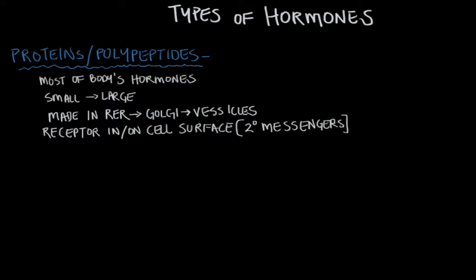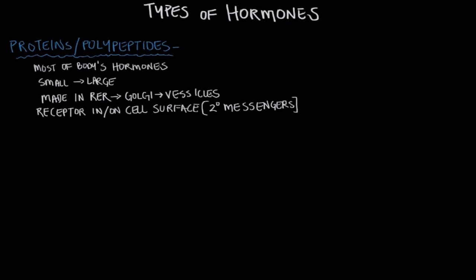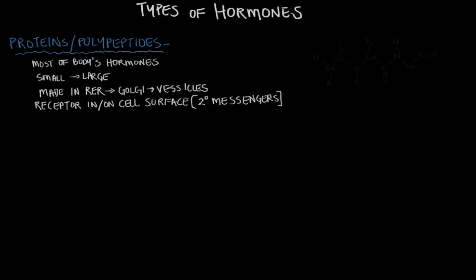I went ahead and drew in an example of a polypeptide hormone, and I want to show you where the peptide bonds are, because these bonds really unify this class. Right in between the carbon and the nitrogen here — and the carbon and the nitrogen here — I'll draw some arrows. These carbon-nitrogen bonds are the peptide bonds I was referring to. These links of amino acids used as chemical messengers are called proteins and polypeptides.